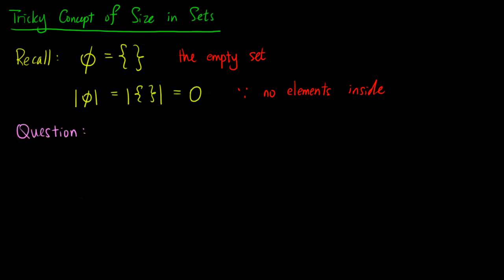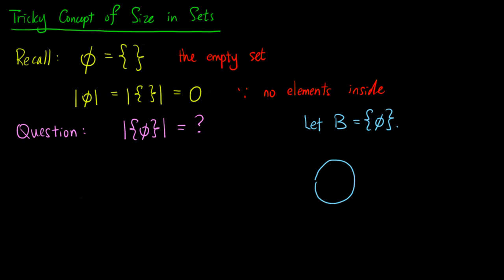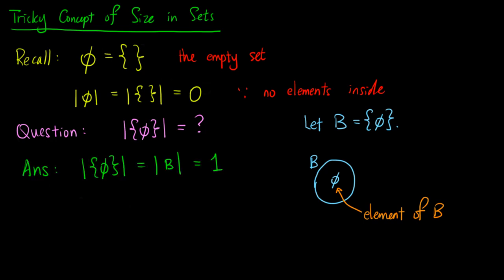Now let me ask you a question. What is the size of the set containing the empty set? Is it still zero? Let's think of it this way. Let B be the set which contains the empty set. If we draw a circle representing B in a Venn diagram, then what's inside is the empty set. This means that the empty set is actually an element of B. There is one element in B, and that element happens to be the empty set. So the size of B, which is the number of elements in B, is actually one.